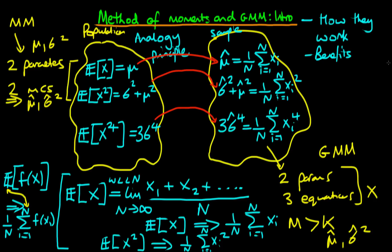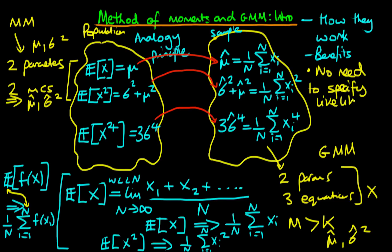Now I want to talk briefly about the benefits of these types of estimation strategies. The first benefit is that there is no need to actually specify the exact likelihood. We didn't need to specify the distribution within our population — all we needed was to specify some moments of that distribution. That's a benefit in circumstances where the distribution is unknown or analytically quite intractable. A second benefit is that because we haven't specified a distribution at all, this approach is robust to distributional assumptions.